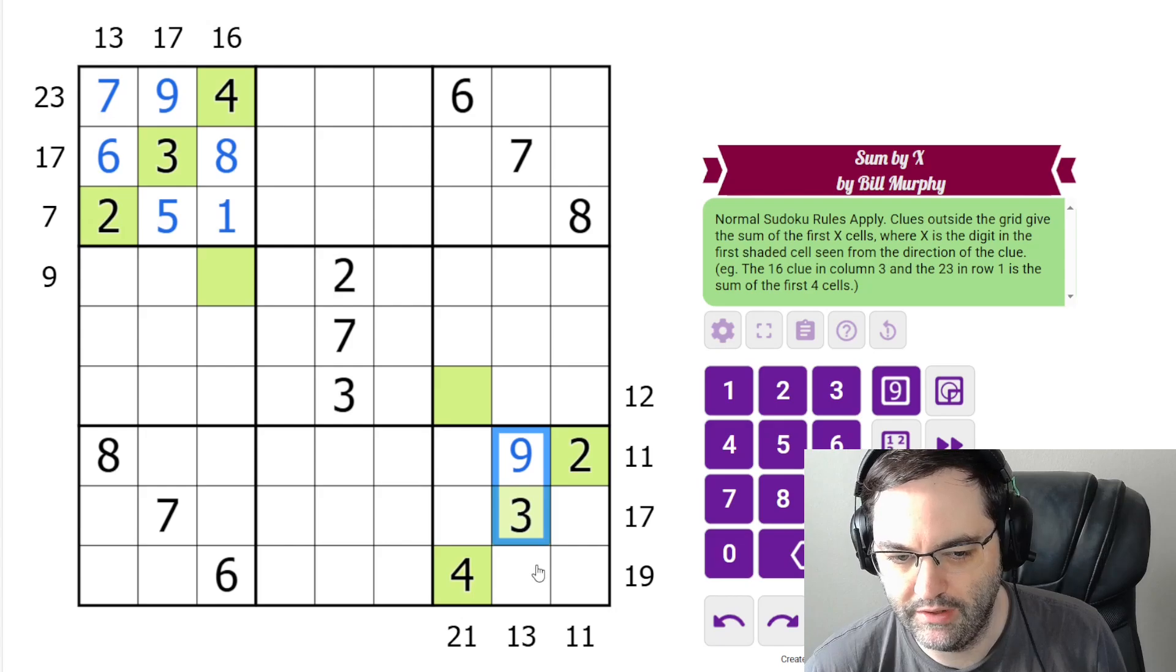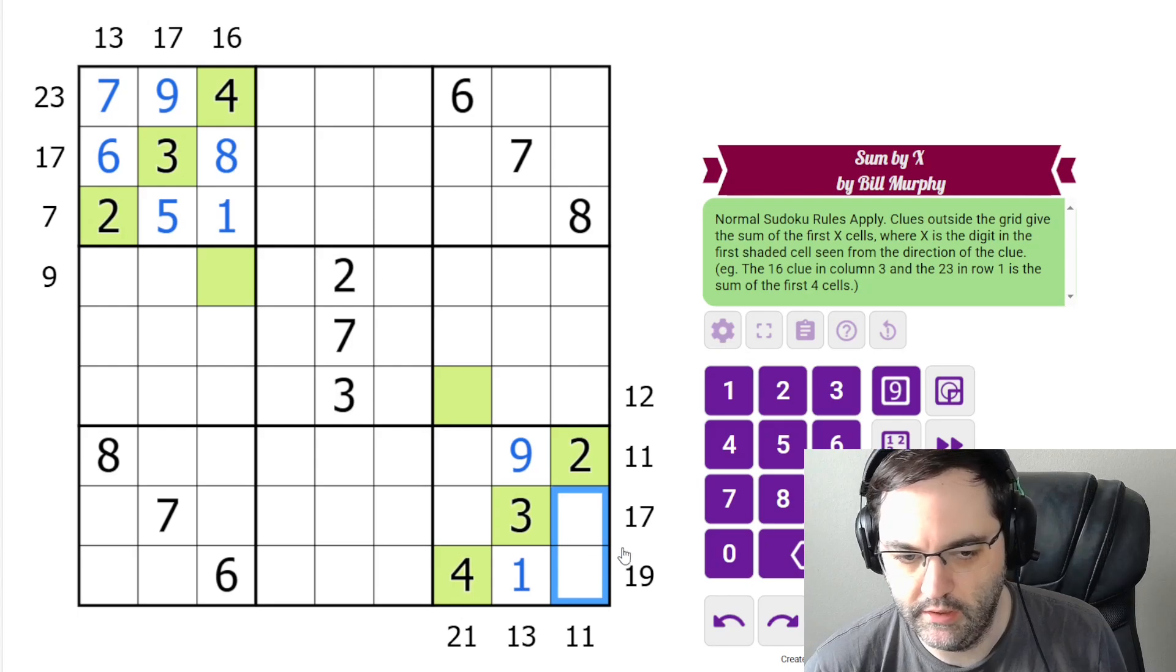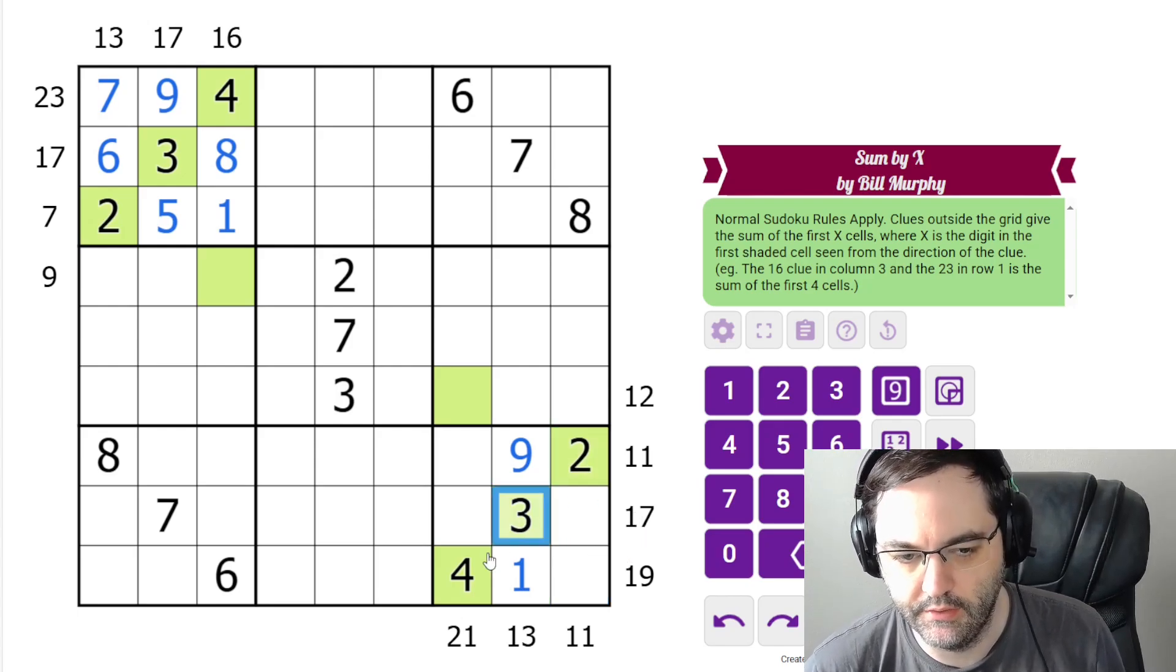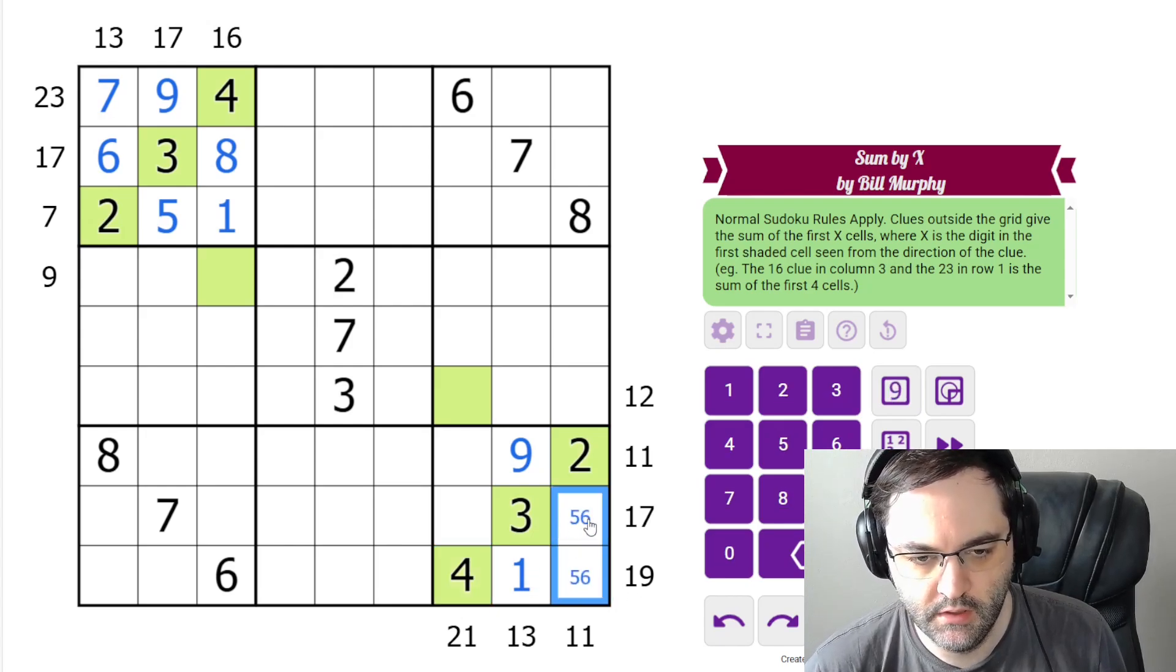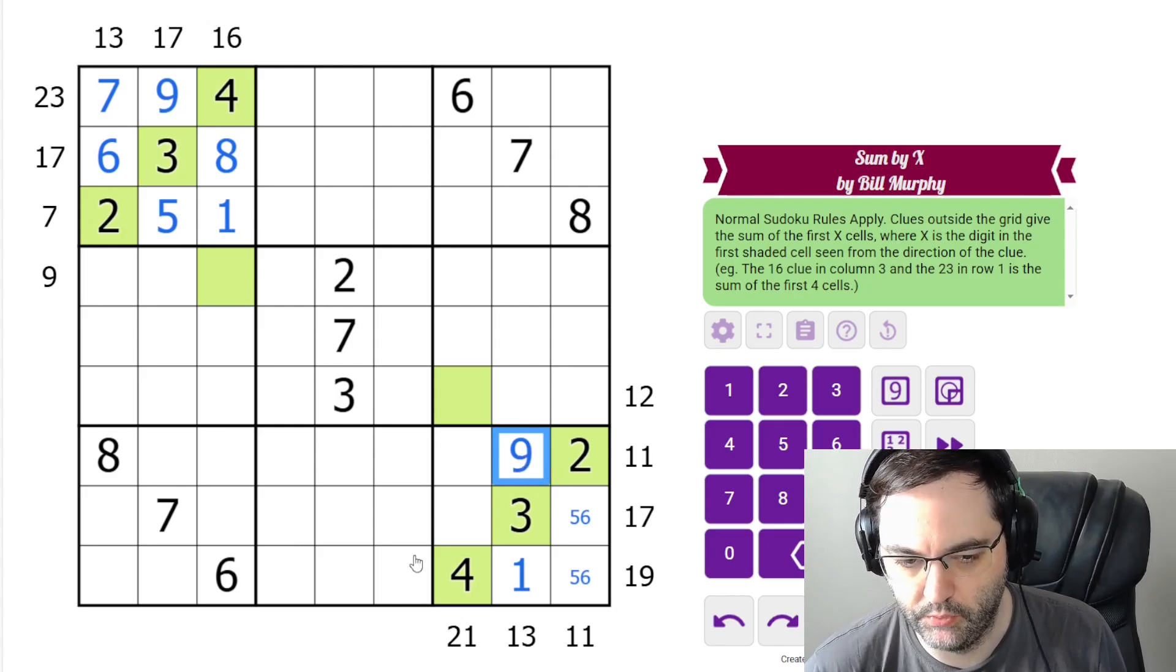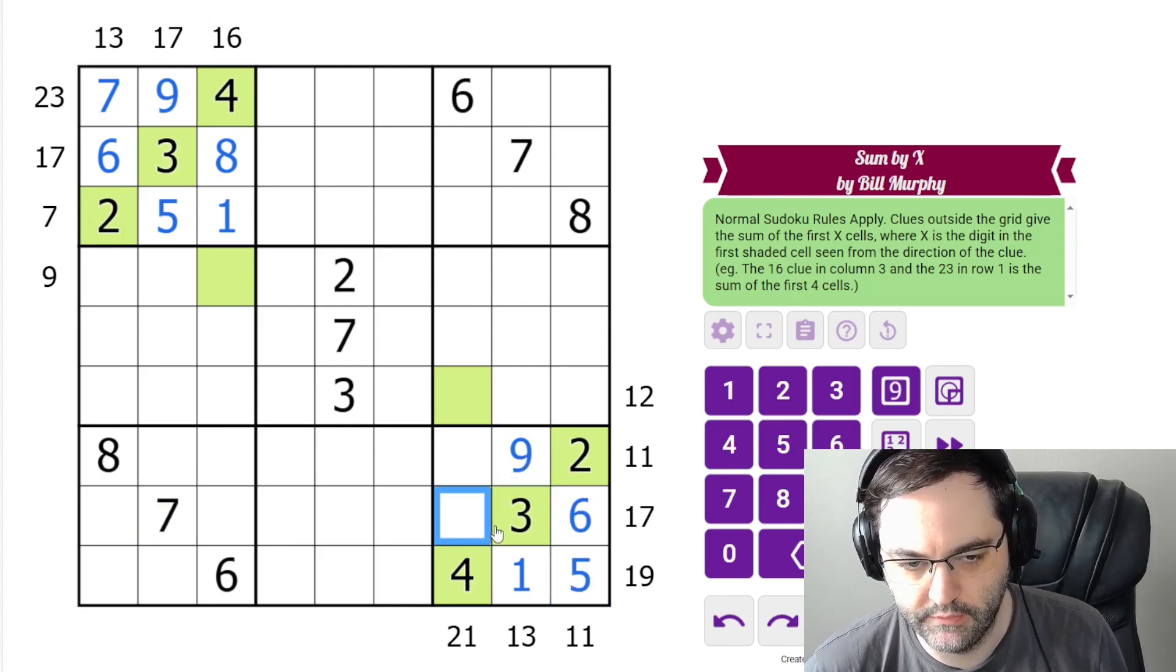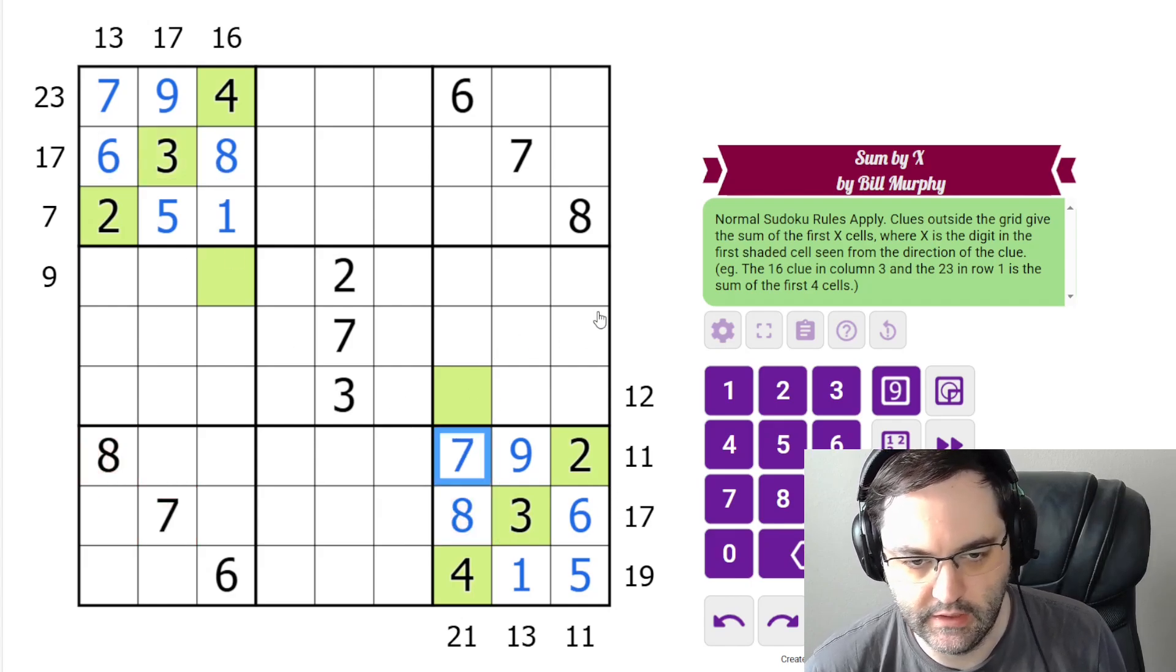Here we need 11 in the first two cells. It's not 2, 9. It's not 3, 8. It's not 4, 7. It must be 5, 6. The 17 here, if we had 3, 5 here, just like we did up here, we would need a 9. But we can't here because we have a 9 in the box already. So this must be in this order with an 8 matching this. And that's going to leave us with 7 here.